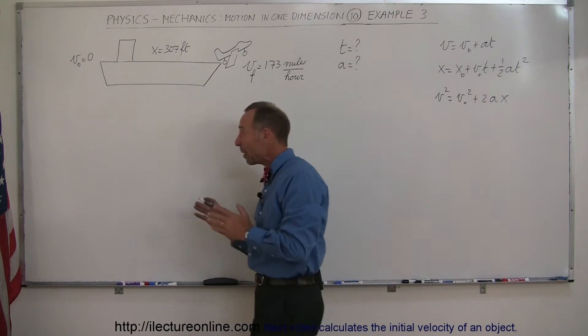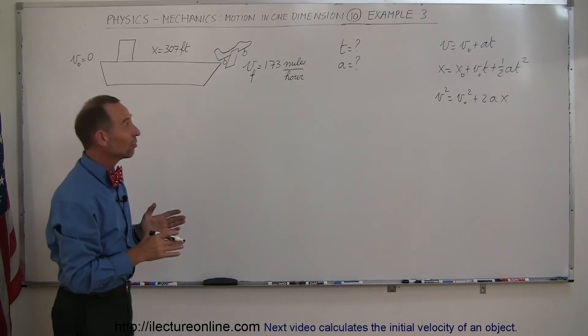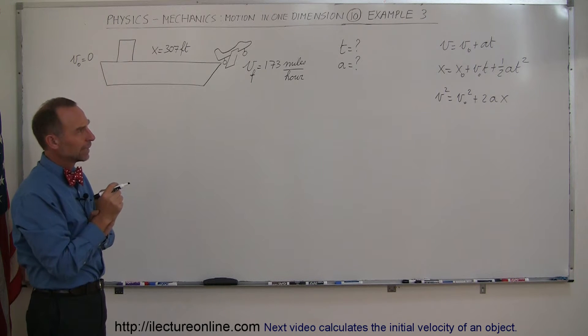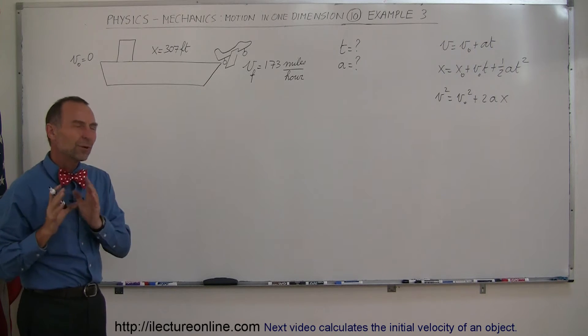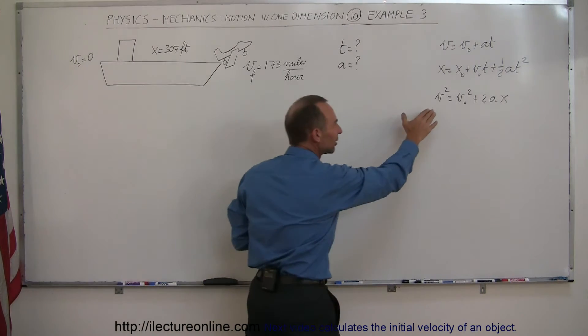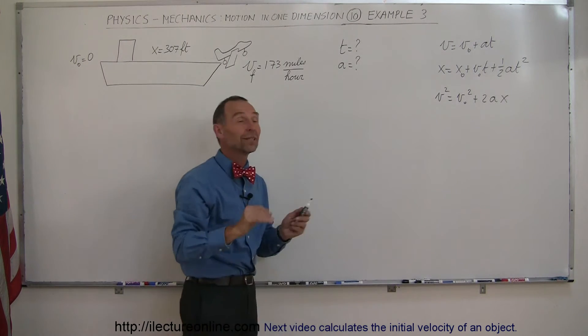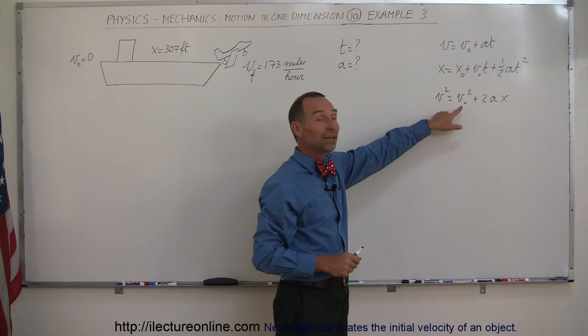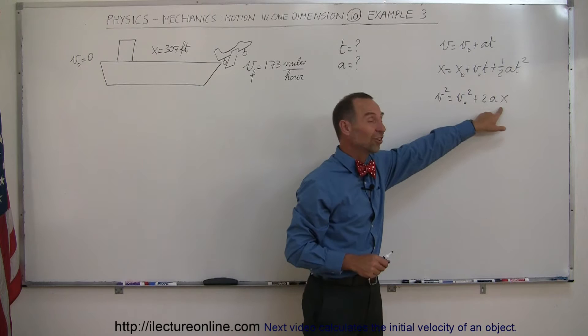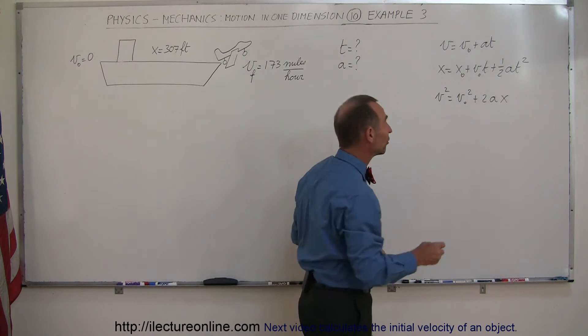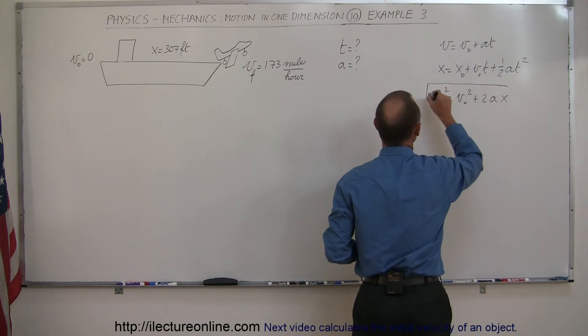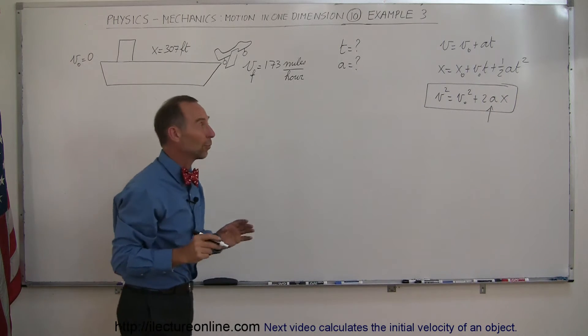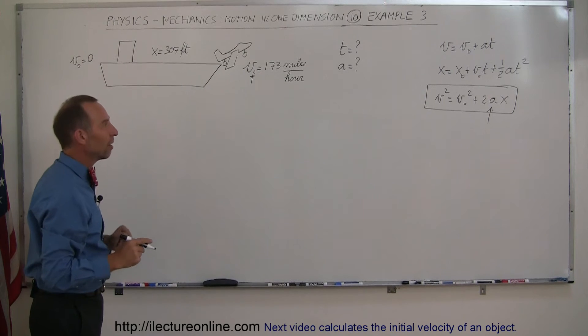So based upon what's given in the three equations, how should we go about solving this problem? We're not given the time, so when we're not given the time, I'm inclined to look at this third equation right there because we don't need the time there. We are given the final velocity, and we are given the initial velocity, and we know the distance. So I can use this equation to find the acceleration. So bingo, here's our candidate. Let's go ahead and use that equation to find the acceleration of that takeoff.